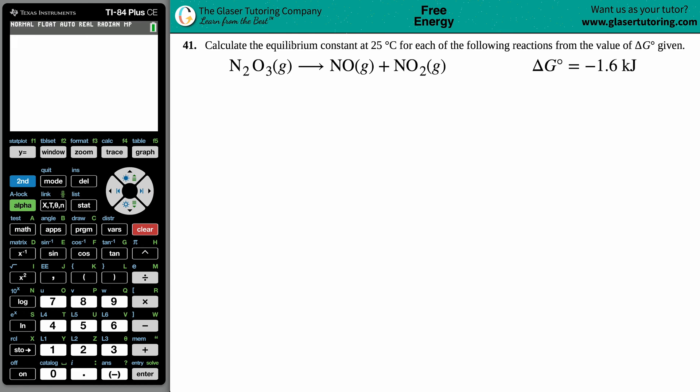Number 41: Calculate the equilibrium constant at 25 degrees Celsius for each of the following reactions from the value of ΔG° given. Okay, so we have N₂O₃ gas yields NO gas plus NO₂ gas, and they give me the Gibbs free energy of negative 1.6 kilojoules.